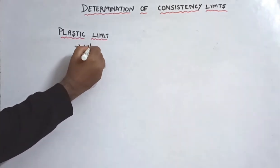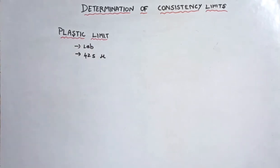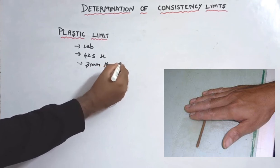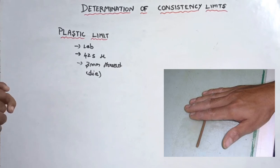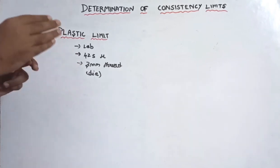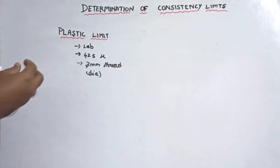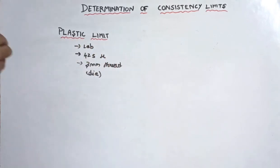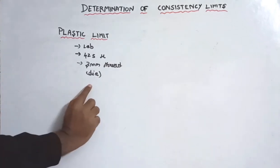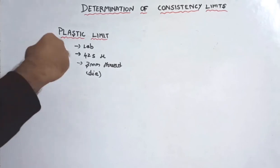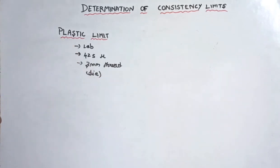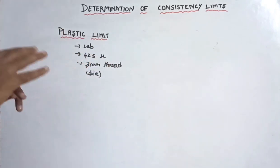Next is the Plastic Limit. It is easy to perform in the lab. What you do is roll the soil into a 3mm diameter thread. You roll it without crumbling. You add a little water to the soil and roll it into a thread up to 3mm diameter. This water content at which the thread crumbles is the Plastic Limit.